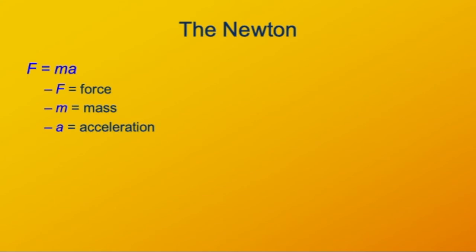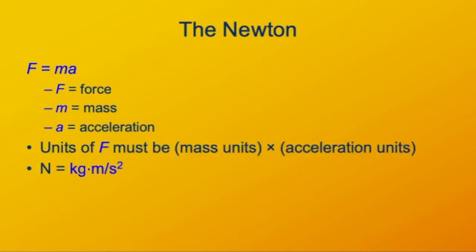The Newton itself is defined from this Newton's second law, acceleration is force divided by mass. A force unit has to be mass units times acceleration units. Therefore, since mass units are kilograms, and since acceleration units are meters per second per second, then a Newton must be a kilogram meter per second per second, or in short, a kilogram meter per second squared. The Newton is the unit of force, and that's composed of units for mass, distance, and time.